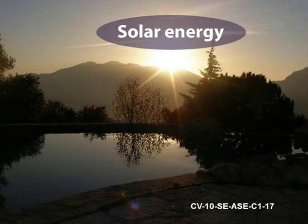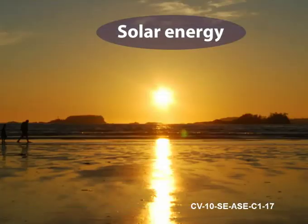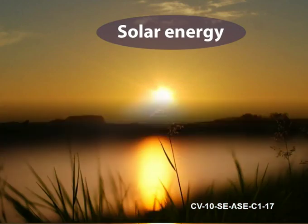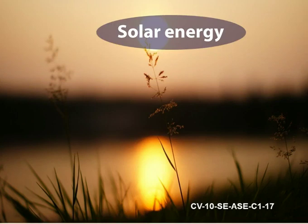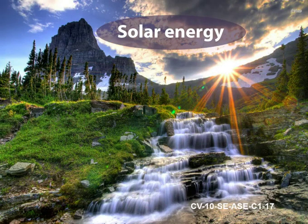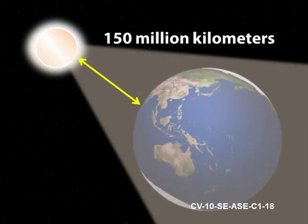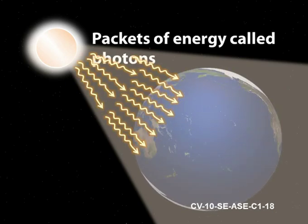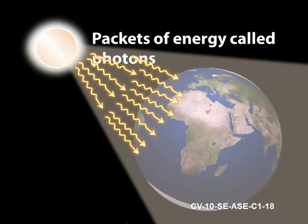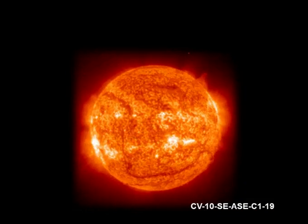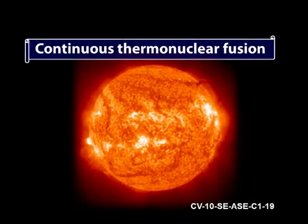Now let us understand about different alternative sources of energy. The sun is the largest source of renewable energy and is abundantly available in all parts of the earth. It is one of the best alternatives to non-renewable sources of energy. The sun provides us an enormous amount of energy in the form of solar radiation, reaching the surface of the earth from a distance of about 150 million kilometers. Solar radiation consists of packets of energy called photons. Energy of the sun is due to continuous thermonuclear fusion taking place in the sun.